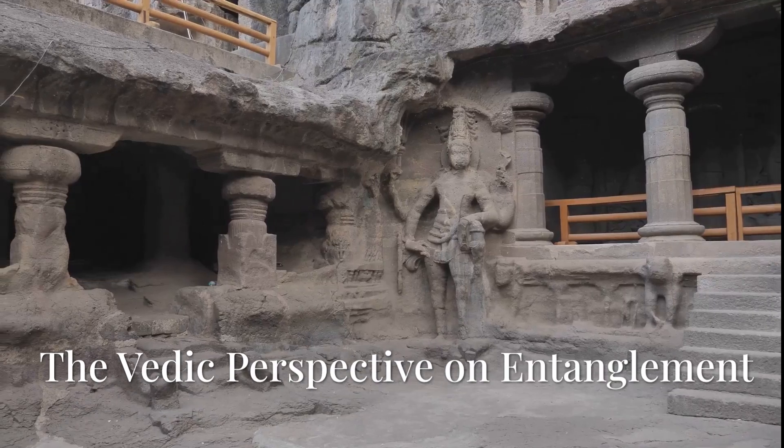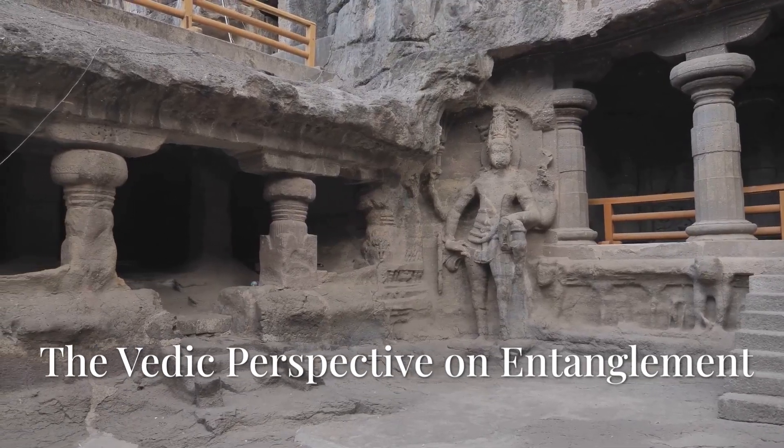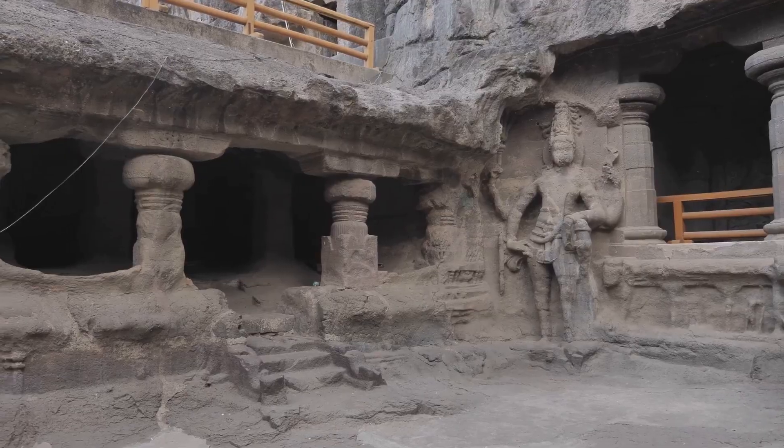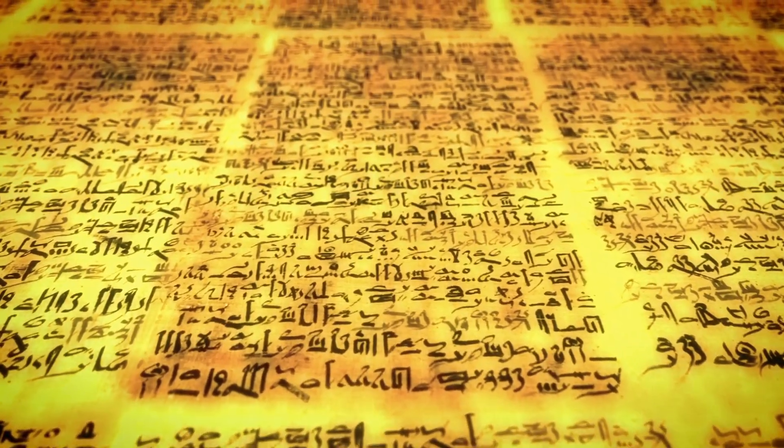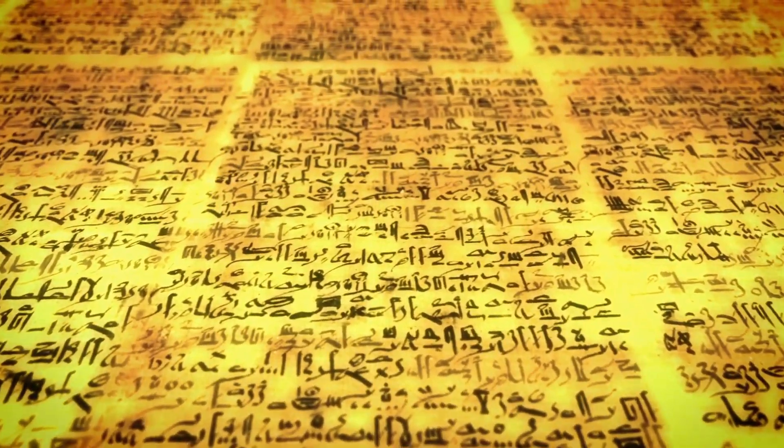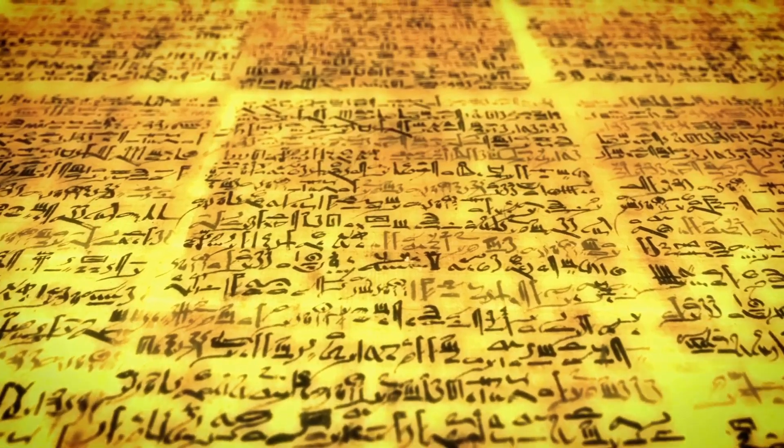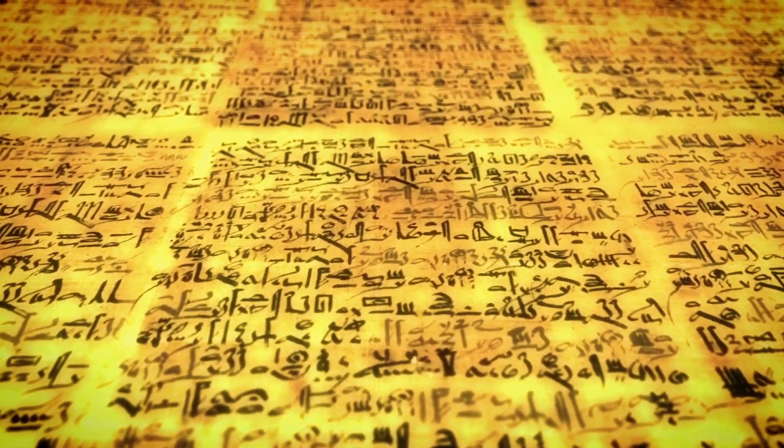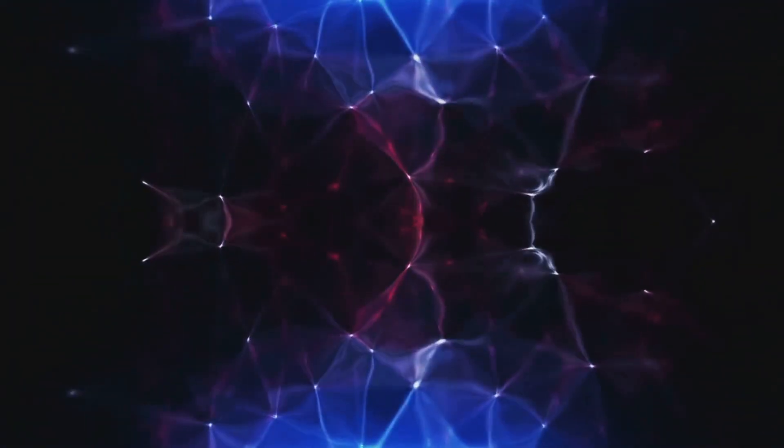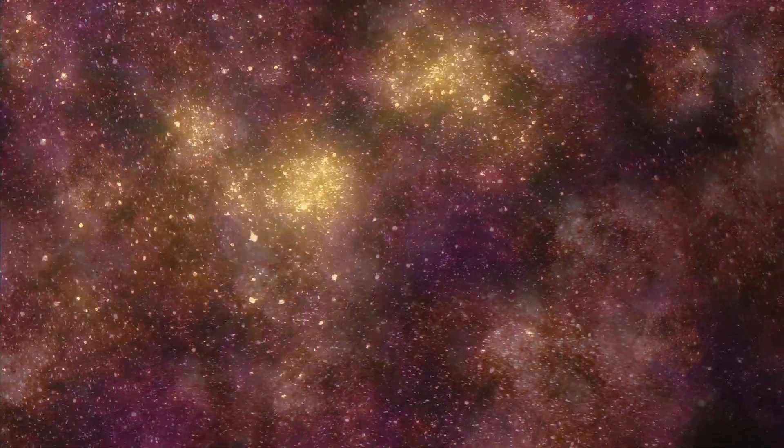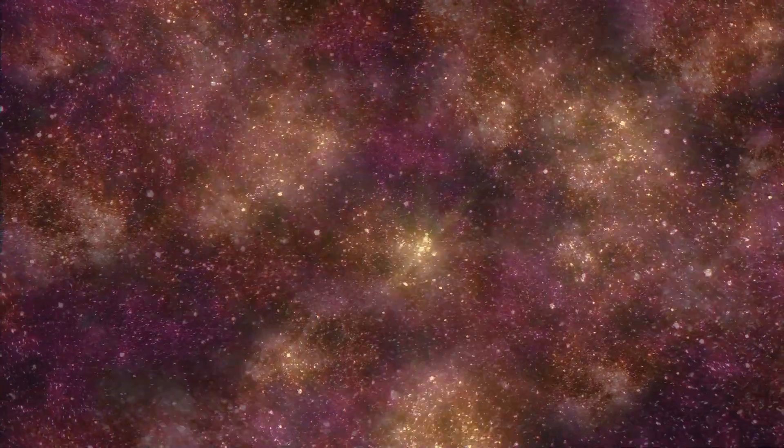Now let's turn to ancient Indian philosophy. Thousands of years ago, the Vedas and Upanishads described a concept strikingly similar to quantum entanglement: the idea that everything in existence is interconnected beyond space and time. In Vedantic thought, the universe is not made up of separate objects, but is a manifestation of Brahman, the ultimate reality.